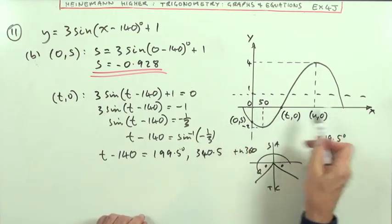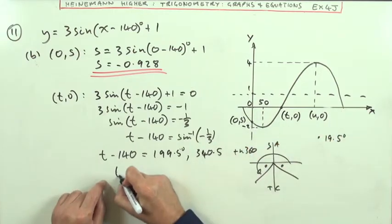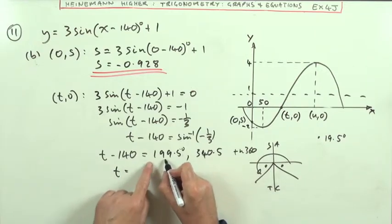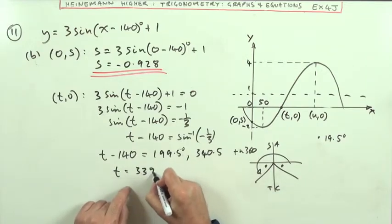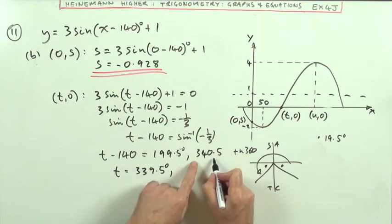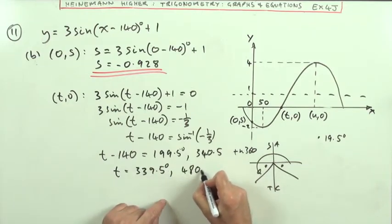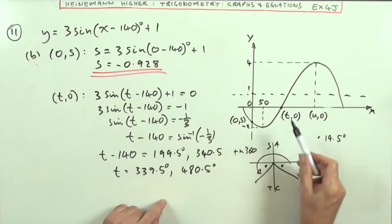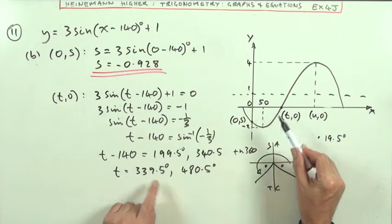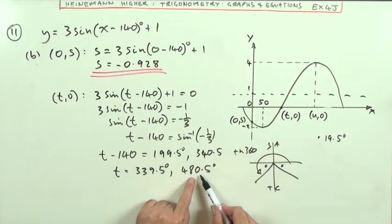I know I want my answers between about 0 and 360. So T is going to be adding 140 onto them. 140 onto that is 339.5. 140 onto that is 480.5. Now notice this answer here can't be as much as 339. That's because this is going off the scale.